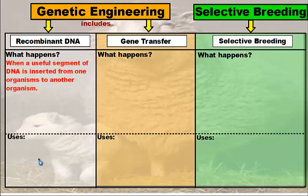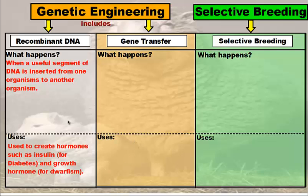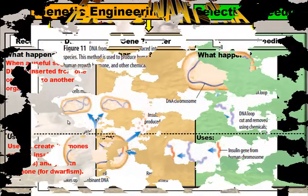Using recombinant DNA, we can treat certain hormonal disorders such as diabetes and dwarfism. We use recombinant DNA to produce insulin for diabetes and growth hormone for dwarfism. But what we are going to concentrate on is the use of recombinant DNA in the production of insulin for diabetics.